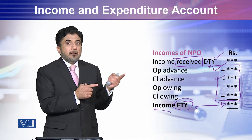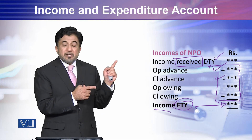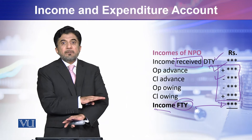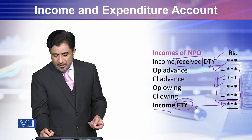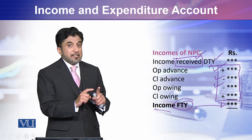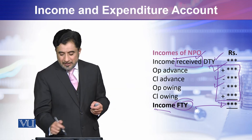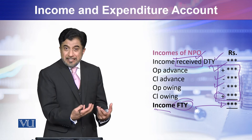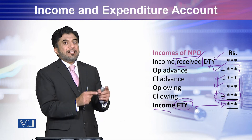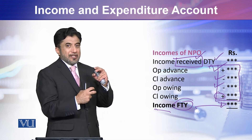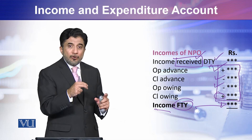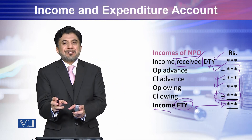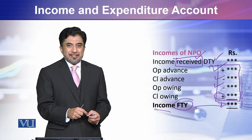The income that was due at the opening date — that was due from the previous year — has already been included in this year's received amount, so on the basis of that being already collected, it will not be included in this year's income and should be minused. After that, the income related to this year that you have not yet received belongs to your current year and should be added to your income received amount so that you get the correct amount of income for the year. This is how you pass your receipts through the filter of accruals to get the income for the year.